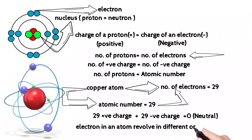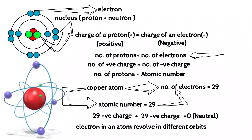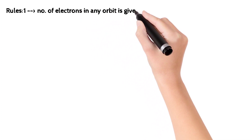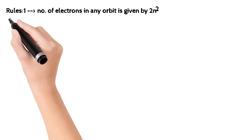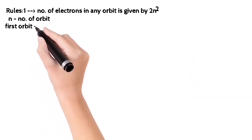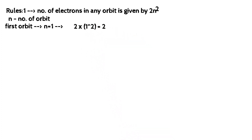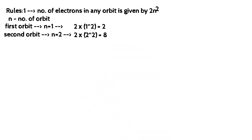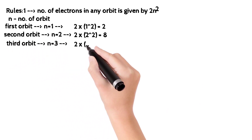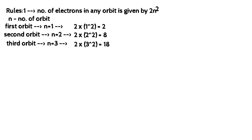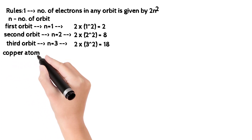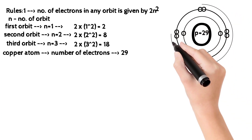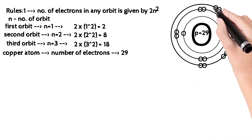Electrons revolve around the nucleus in different orbits, each with a different number of electrons. The rule is 2n² electrons per orbit. In the first orbit, n=1, so 2×1²=2 electrons. In the second orbit, n=2, so 2×2²=8 electrons. In the third orbit, n=3, so 2×3²=18 electrons.